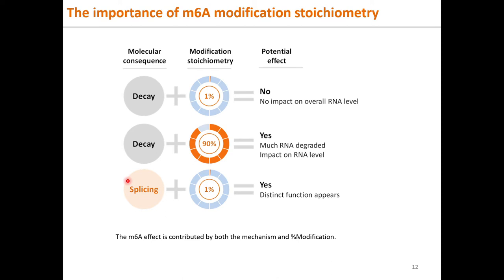Although absent in older profiling methods, M6A modification stoichiometry is functionally meaningful. Whether an M6A can exert the function of RNA splicing, RNA translation, or RNA decay depends also on its percentage of modification. If it is for RNA decay, a small percentage of M6A modification will not have a big impact on the overall RNA level. Only when a significant percentage of RNA is modified and degraded does the RNA level change significantly. However, for RNA splicing, alternative splice variants from even a small percentage of modified RNA can emerge with different effects. Therefore, an actual M6A effect is contributed by both the molecular function and the percent modification.